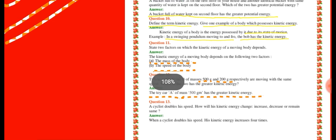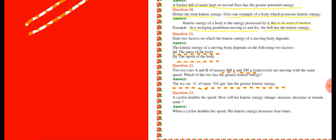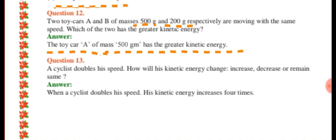Question number 13: A cyclist doubles his speed. How will his kinetic energy change? When a cyclist doubles his speed, his kinetic energy increases 4 times.